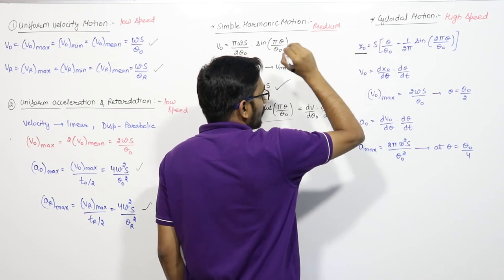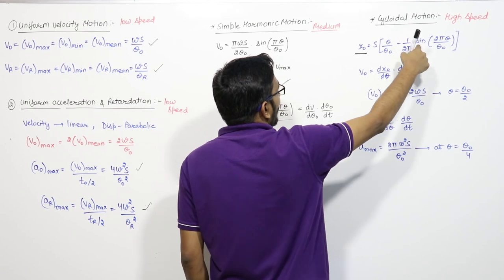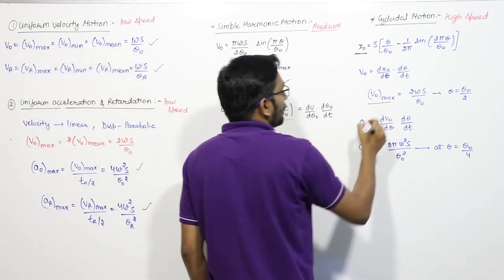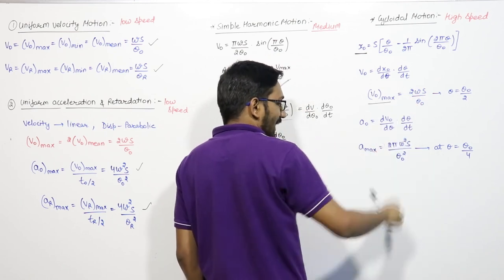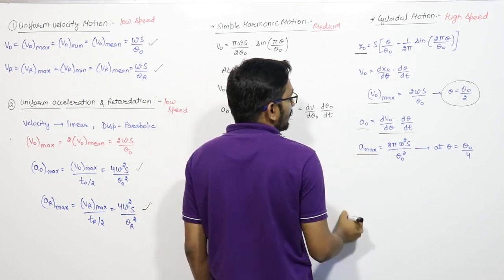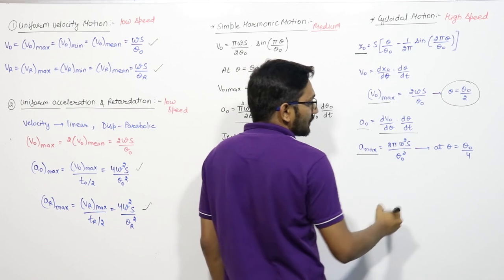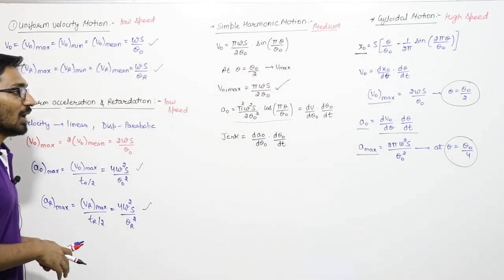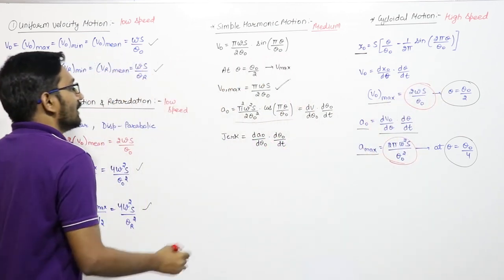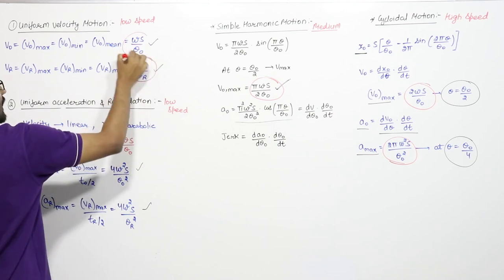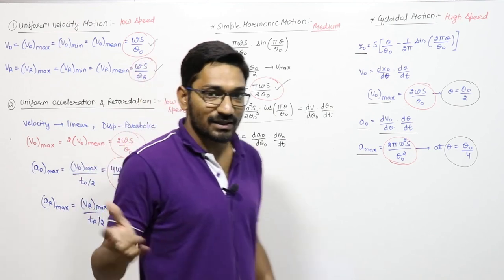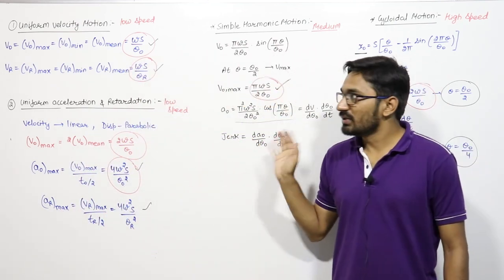Fourth is cycloidal motion, used for high speed cams. Displacement at any θ: x₀ = S·[θ/θ₀ − (1/2π)·sin(2πθ/θ₀)]. Maximum velocity = 2ωS/θ₀ (at θ = θ₀/2). Maximum acceleration = 2πω²S/θ₀² (at θ = θ₀/4). You must learn these maximum velocity and maximum acceleration formulas, as there is no time to derive them in the exam. This concludes the chapter on cams.